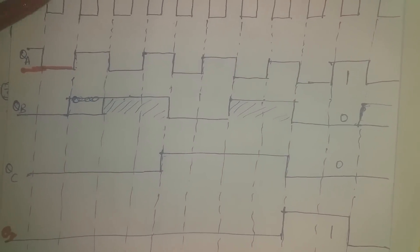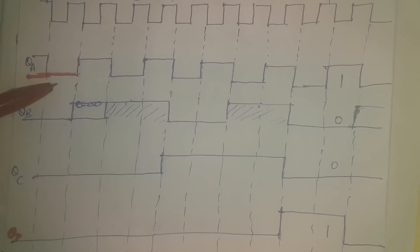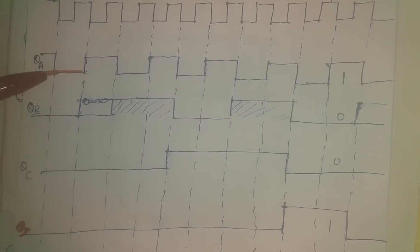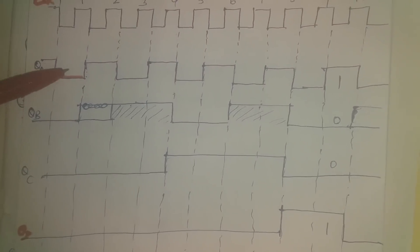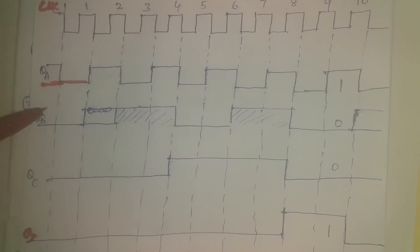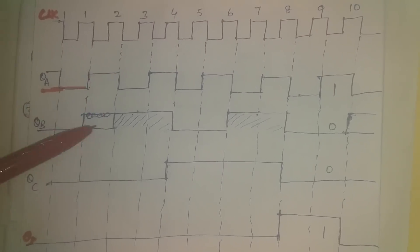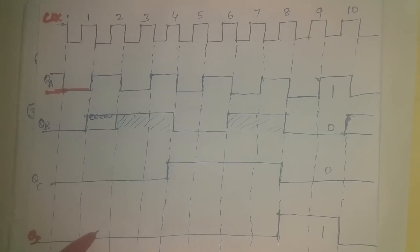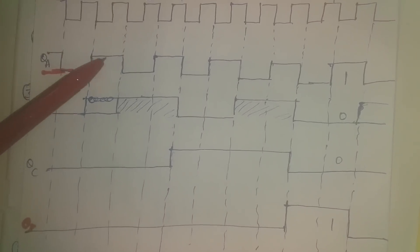Looking at the timing diagram: at the negative edge of the first clock, QA undergoes a change — since J and K are high, Q toggles from zero to high. QB only changes at the negative edge of QA, which hasn't occurred yet, so QB is still low. QC and QD are also still low.